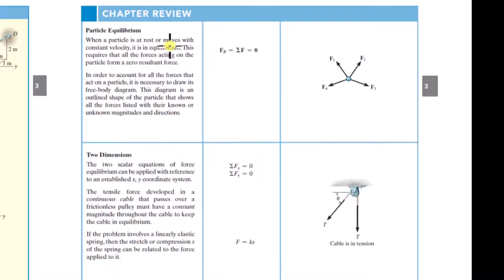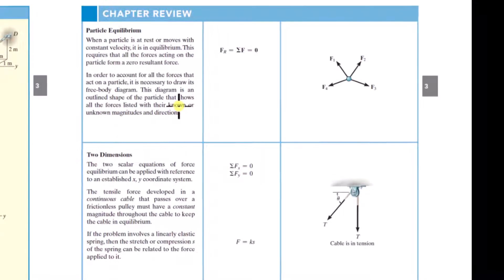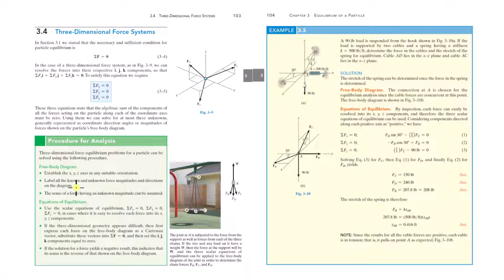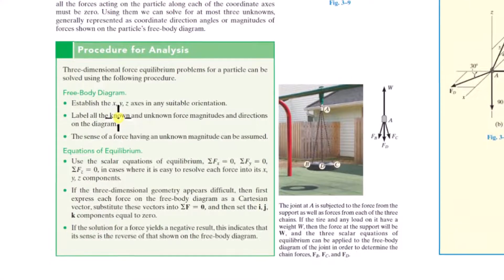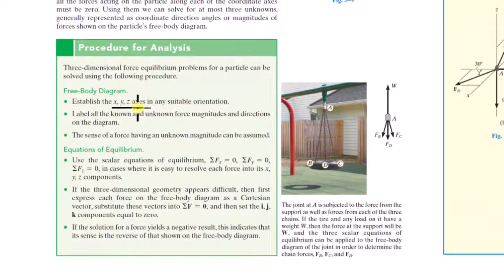Chapter review — particle equilibrium: when a particle is at rest or moves with constant velocity, it is in equilibrium, requiring all forces to form a zero resultant force. To account for all forces acting on a particle, it's necessary to draw its free body diagram — an outline showing all forces with their known or unknown magnitudes and directions. When you do your free body diagram, you isolate the piece, establish X, Y, and Z axes with a right-handed coordinate system, then label all known and unknown forces. For unknown forces, you still have to get the direction right, using a variable for what you don't know.